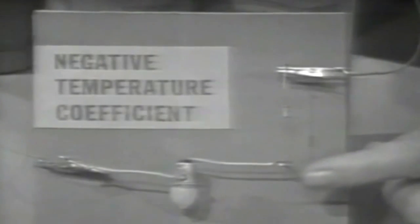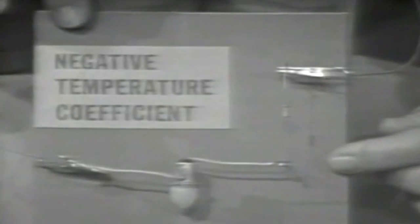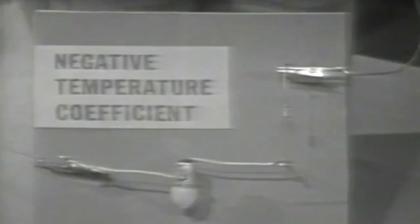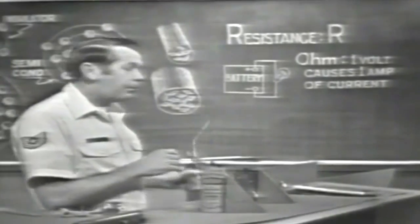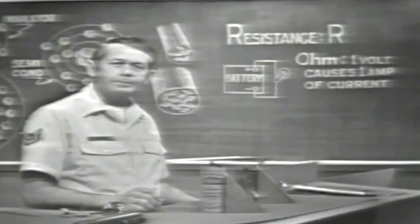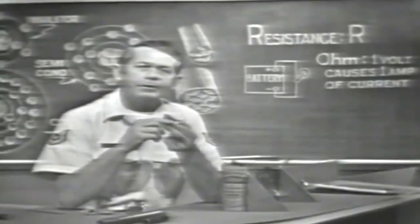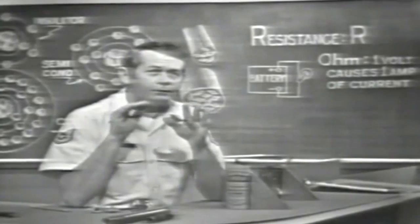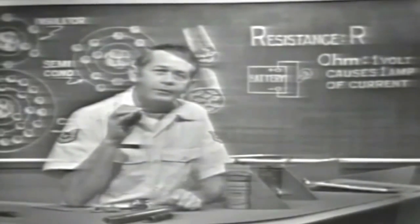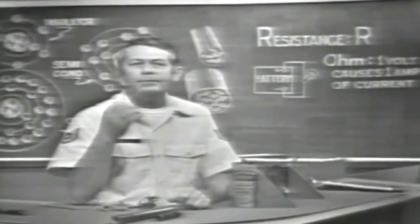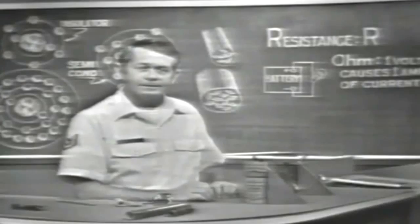Materials that exhibit this property — where resistance decreases with heat — have a negative temperature coefficient. Most materials will exhibit a positive temperature coefficient. So length, diameter, temperature coefficient, and the combination of materials used to make up these resistive devices all determine resistance.